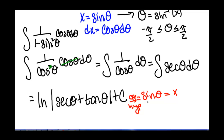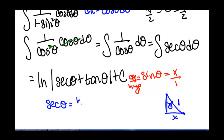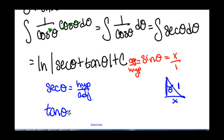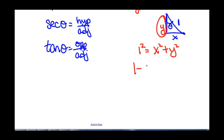Because we know that sine of theta equals x, and sine of theta equals opposite over hypotenuse. So if we think of this as x over 1, then x is the length of the opposite side of our right triangle, and 1 is the length of the hypotenuse. Secant of theta is hypotenuse over adjacent, and tangent of theta is opposite over adjacent. So we need to find the adjacent side, and we can do that by using the Pythagorean theorem. We know that 1 squared equals x squared plus y squared — we'll call the adjacent side y for now.